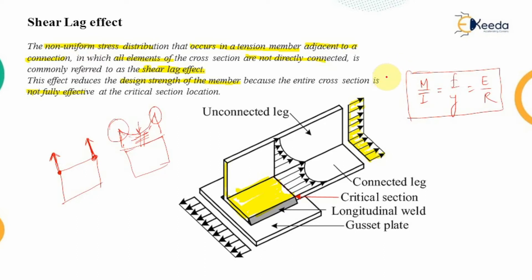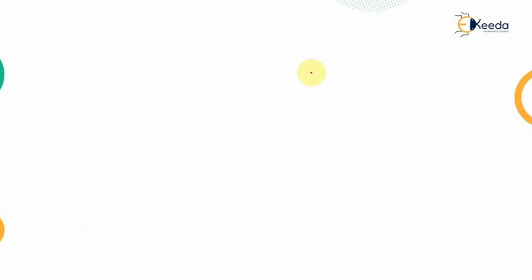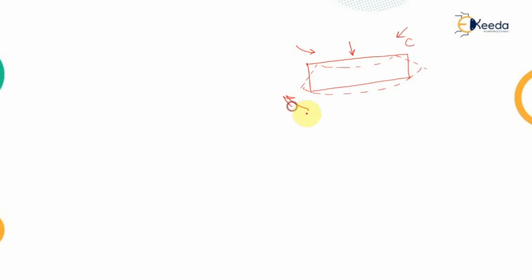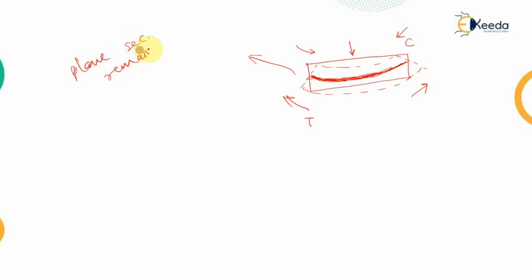That's why we need to remove the shear lag effect from the connected members. One basic assumption of the simple bending theory is that when a beam is acted upon by a transverse load, the top portion is subjected to compressive forces while the bottom portion is subjected to tensile forces. The middle fiber experiences neither stretching nor compression — that is, the plane section before bending remains plane after bending.